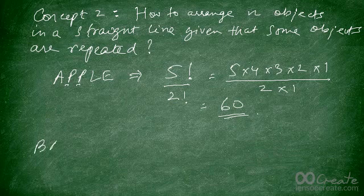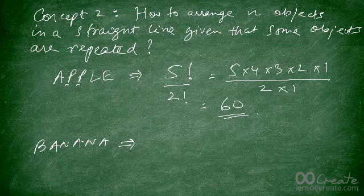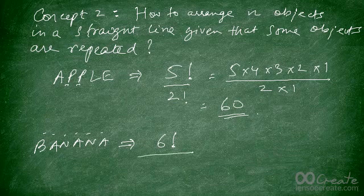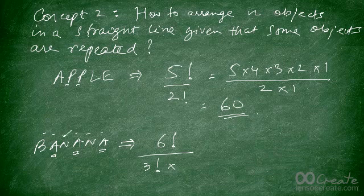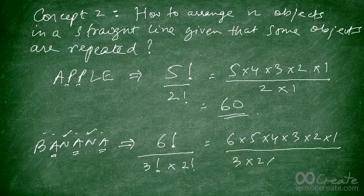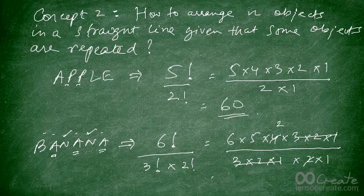Now try to figure out the number of arrangements of all the letters in the word 'banana.' There are six letters in 'banana,' so we start with six factorial. But there's repetition: there are three A's, so divide by three factorial, and there are two N's, so divide by two factorial. That gives six times five times four times three times two times one, divided by three times two times one times two times one. After cancellation, you're left with 60.